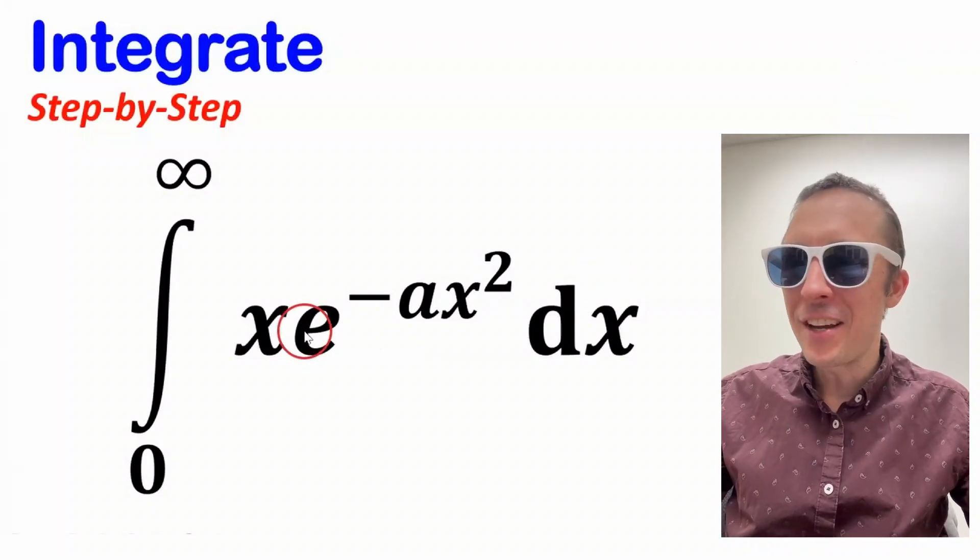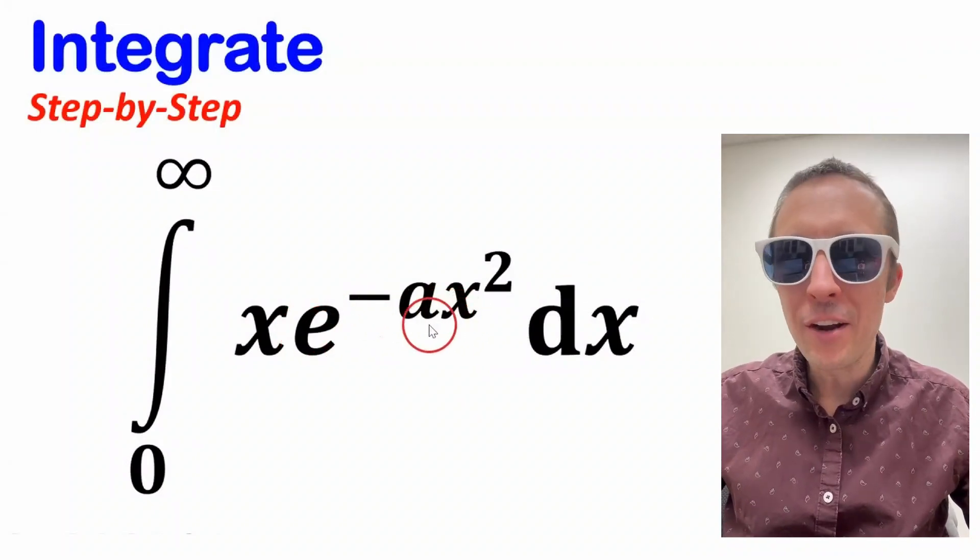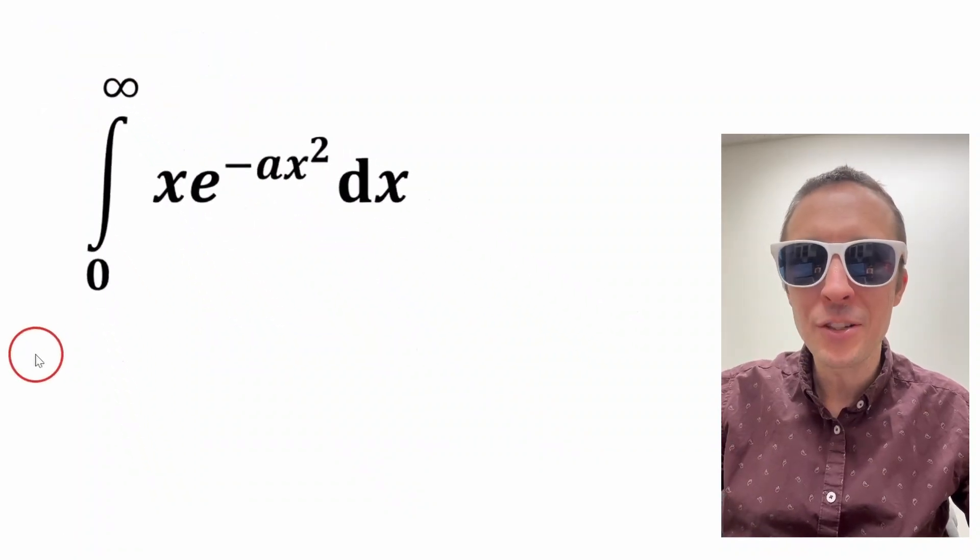My friends, we're going to integrate x times e to the negative ax squared from zero to infinity, and it's going to be awesome.